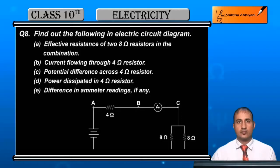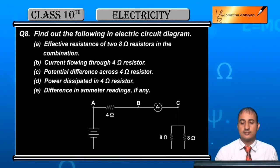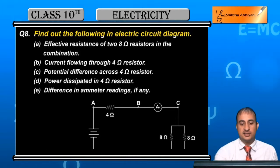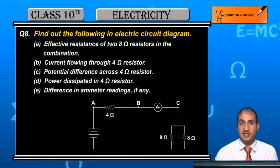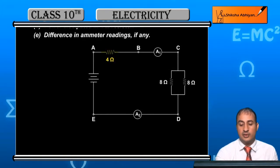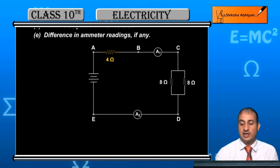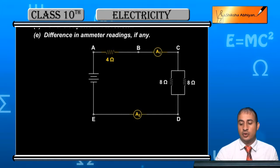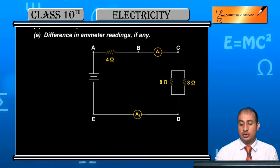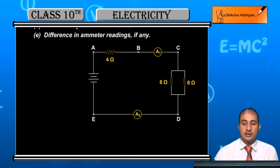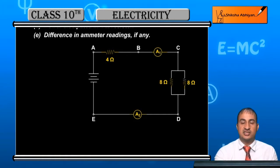Students, see the question. Find out the following in the electric circuit diagram. We have a 4 ohm resistance between A and B, an ammeter E1 between E and D, and another ammeter A2. There are two 8-ohm resistors in parallel combination between C and D. A1 and A2 are both in series in the circuit.